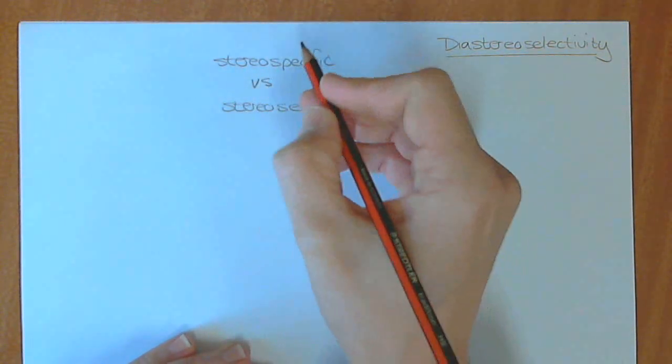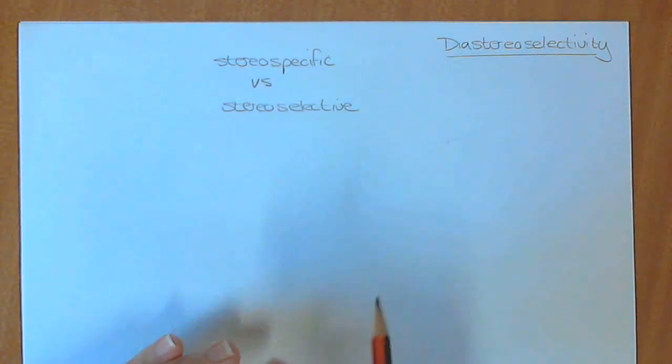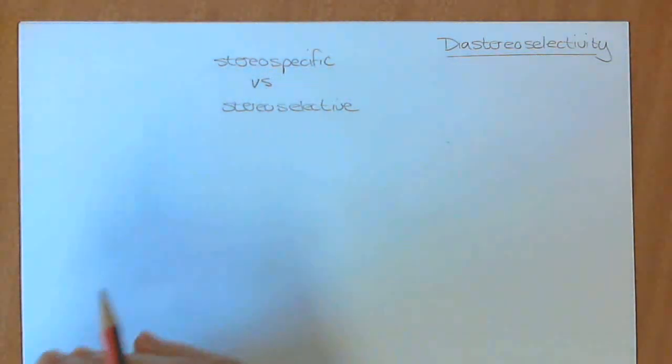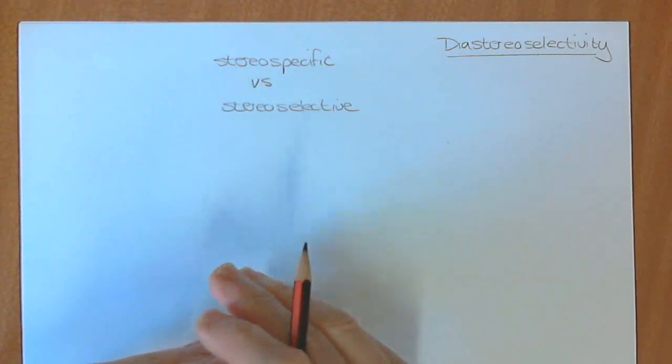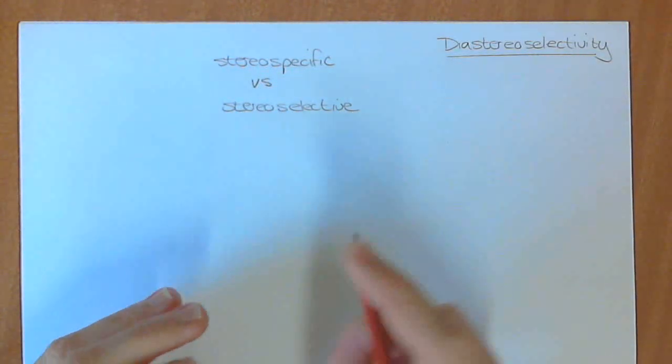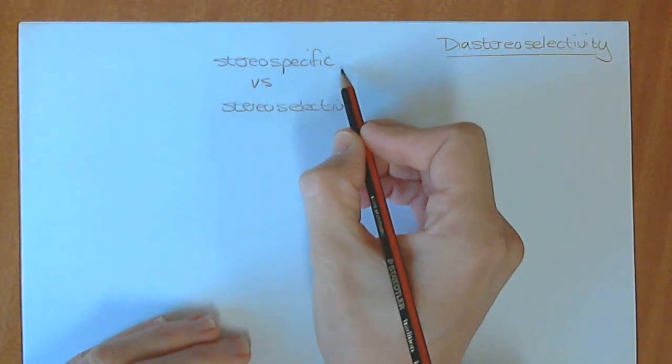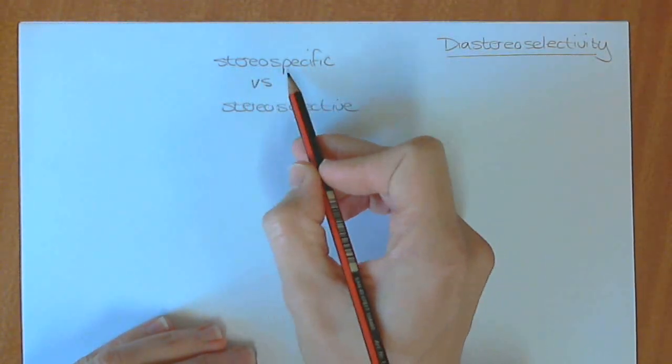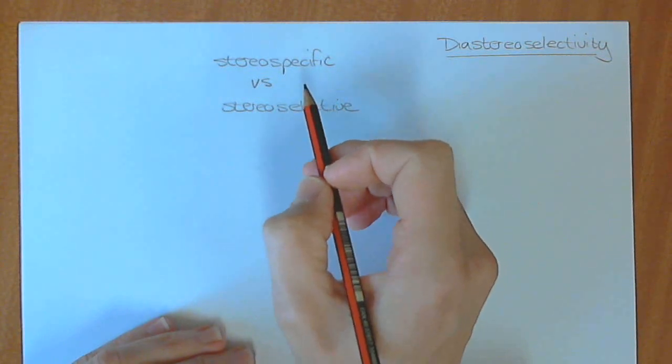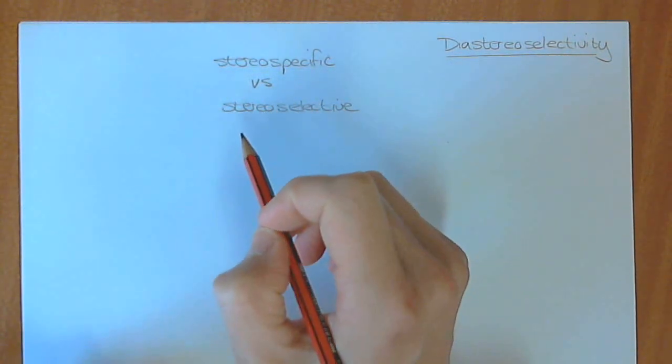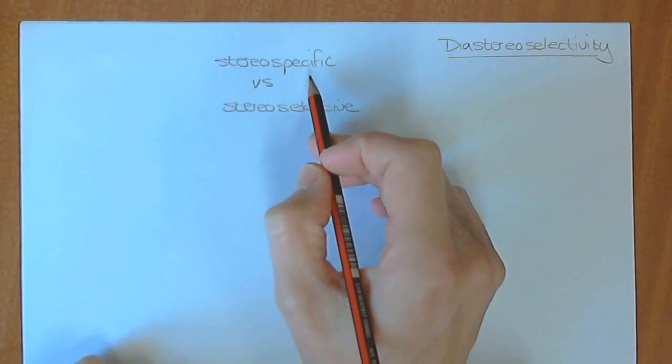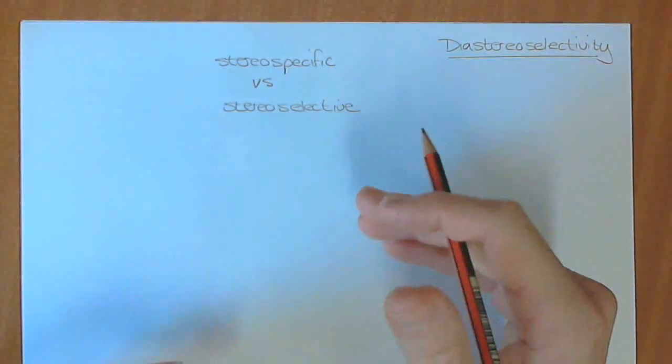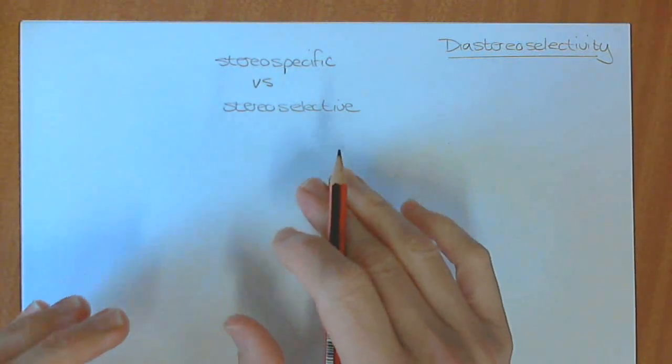However, stereospecific reactions are one where there is only one possible diastereomer or product that would form. The other one is impossible, and because of that, the reaction is specific. Now, you know quite a few examples of stereospecific reactions. An SN2 reaction is an example of that, and an E2 reaction, an elimination reaction, is also an example of stereospecific reaction.